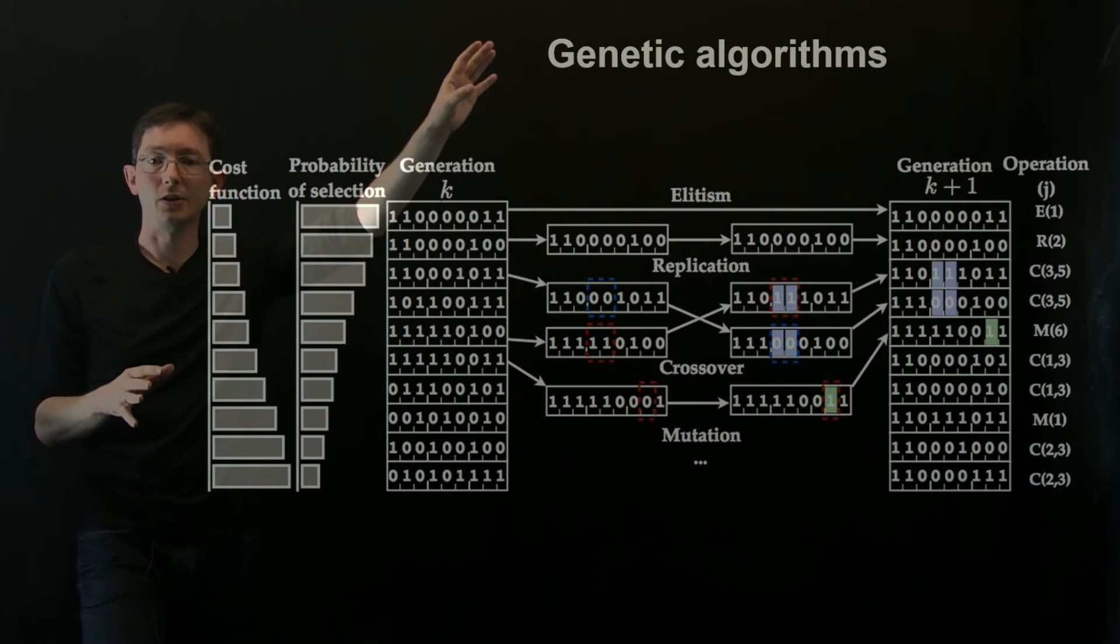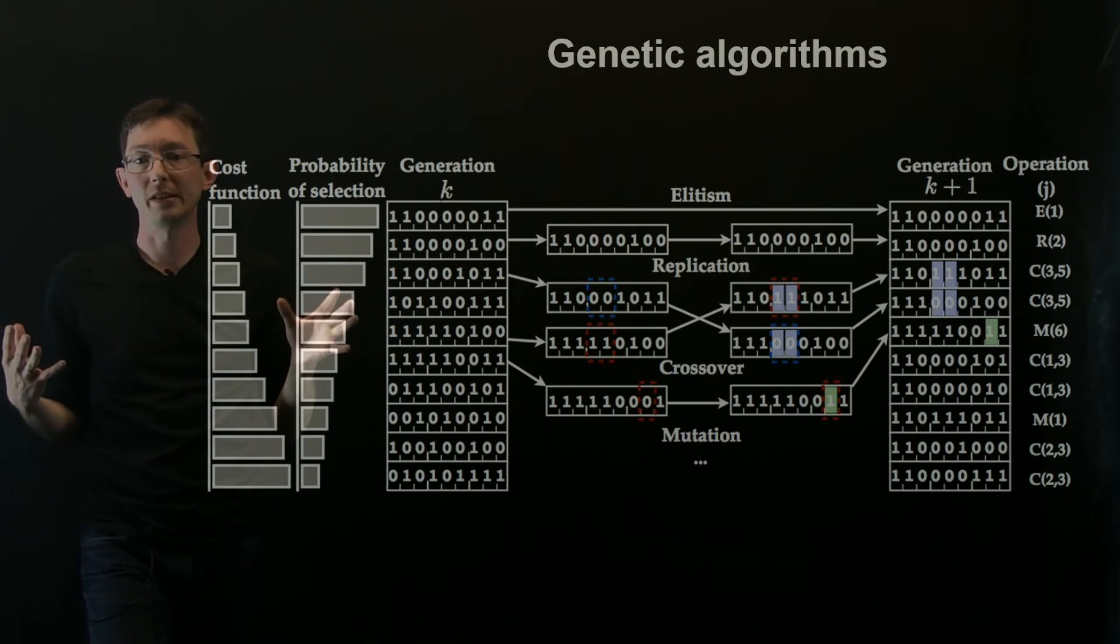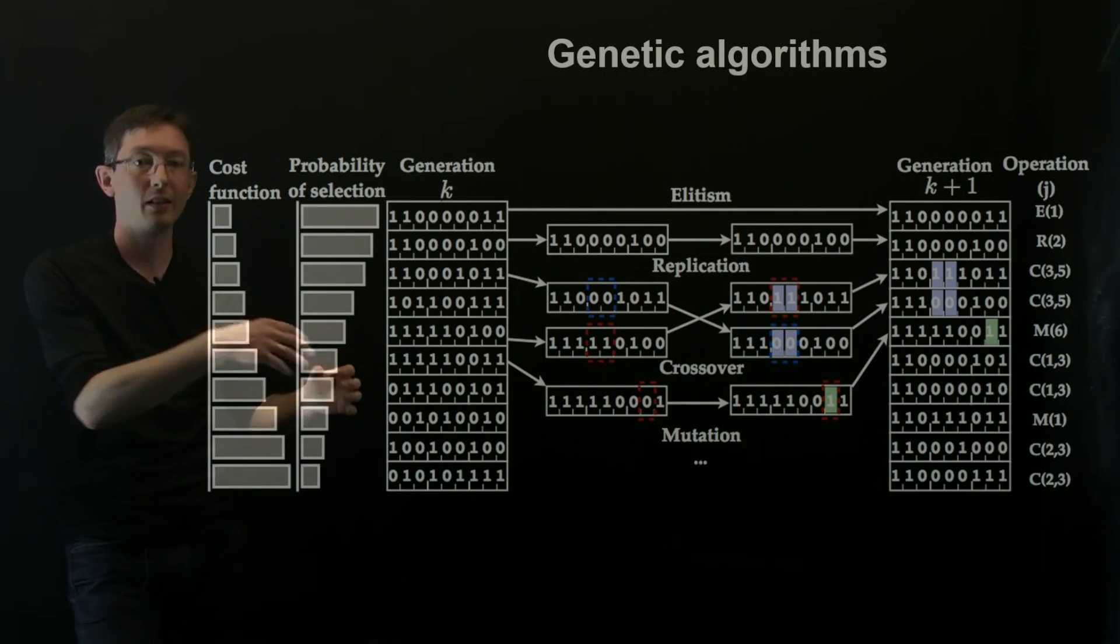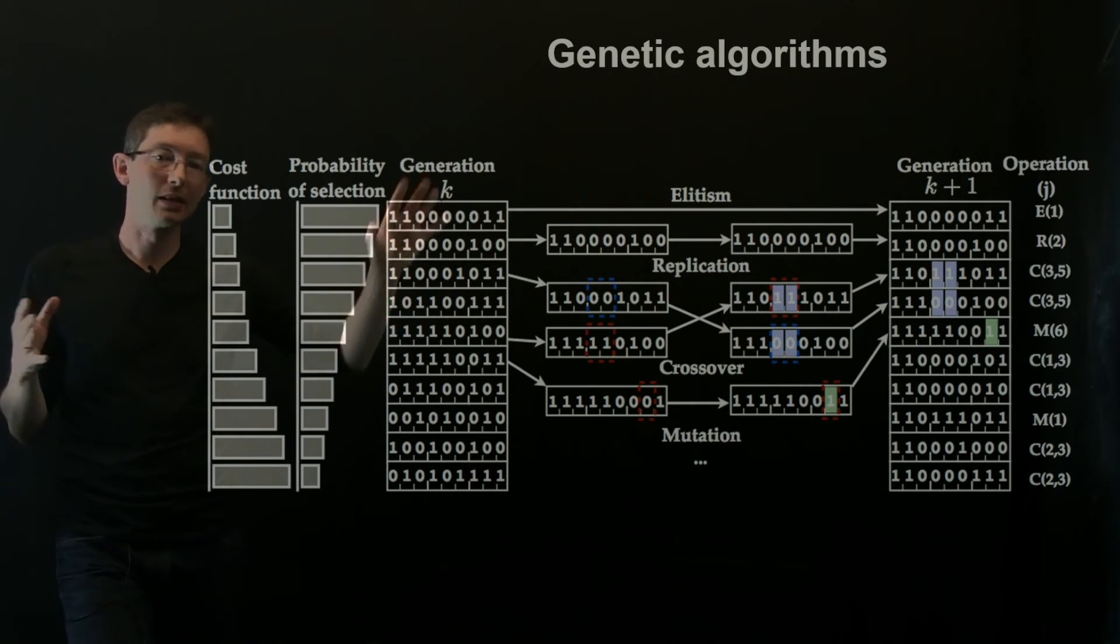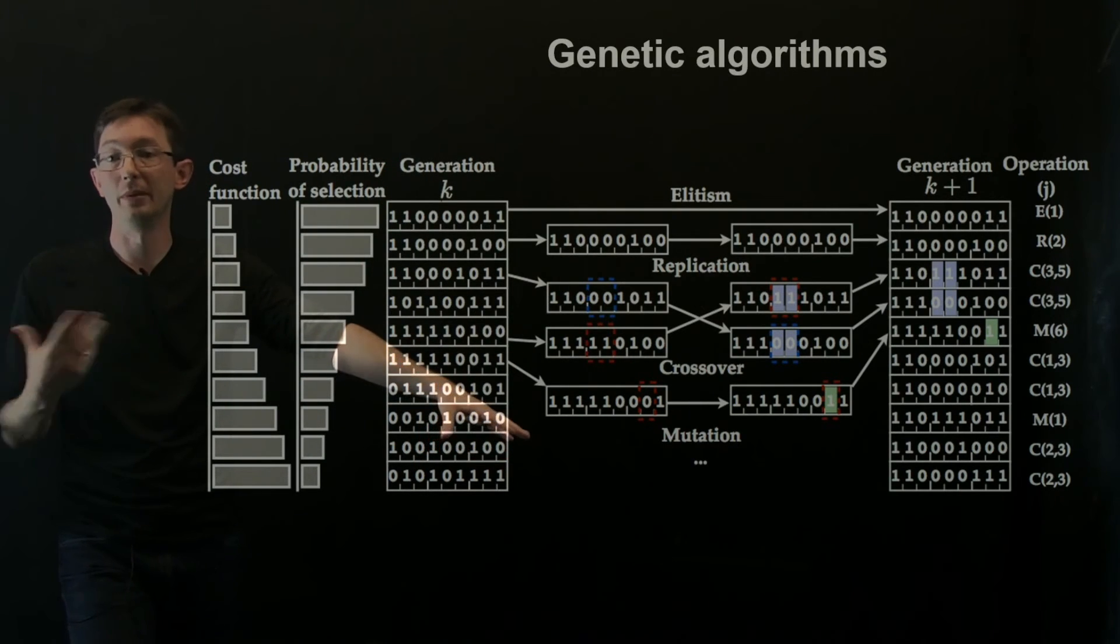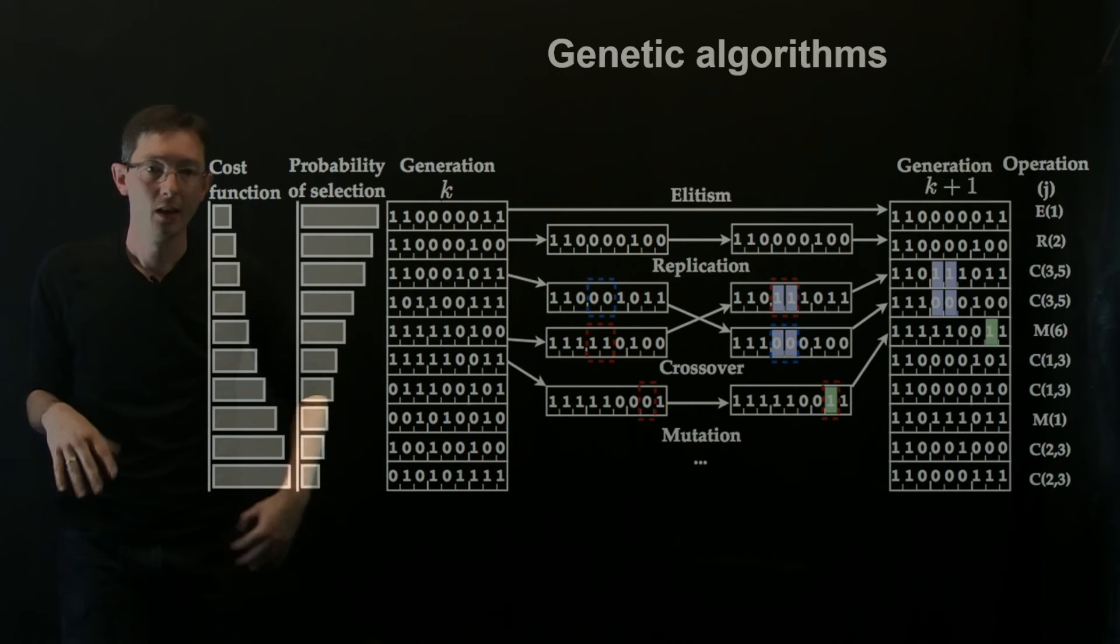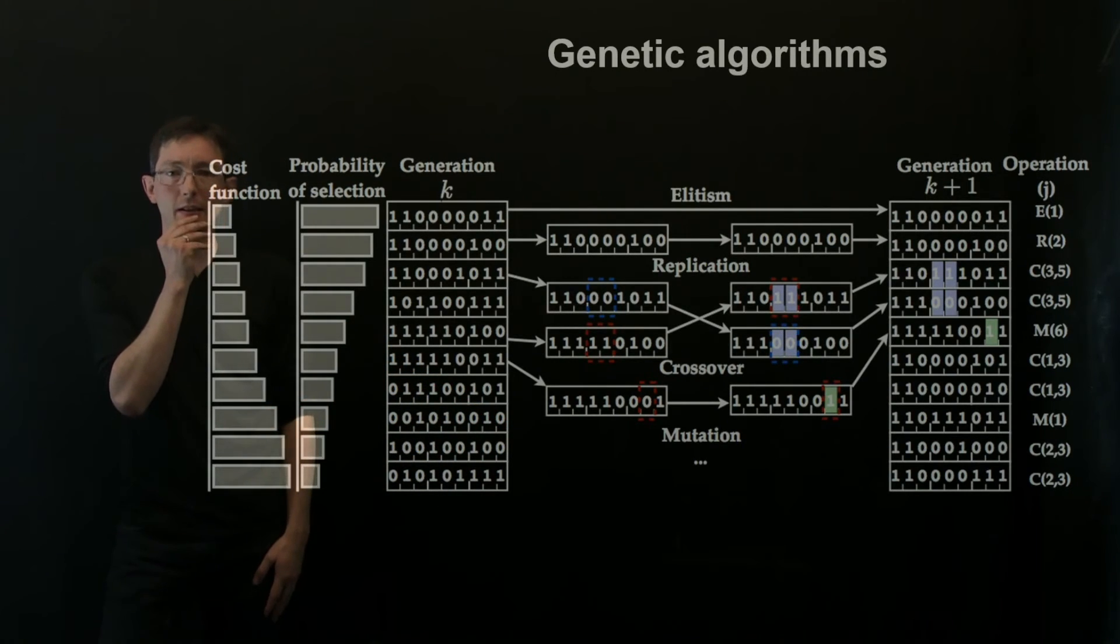And genetic algorithms is not designed just for control. You can use this for any optimization. You can do this for sensor placement, all kinds of things, but I'm just showing you how you would do this to tune a PID controller.